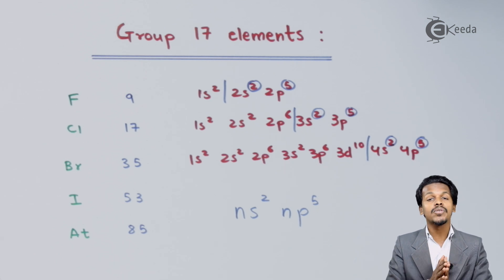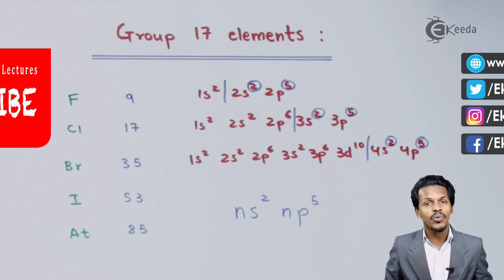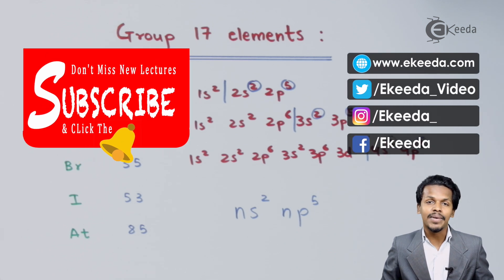Thank you friends for watching this video. I hope you've understood what the group 17 elements are and why they are called halogen families. I hope I'll see you next time. Till then, don't forget to subscribe to Ekida channel.